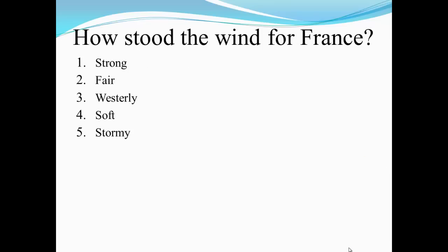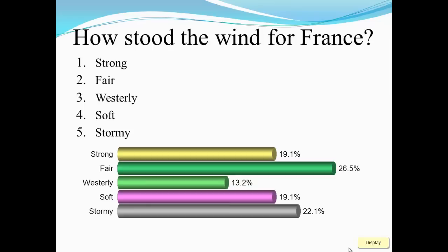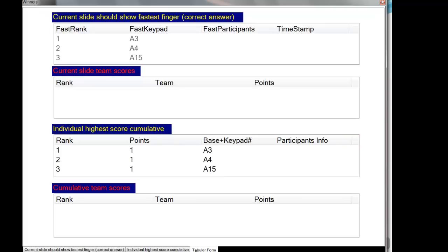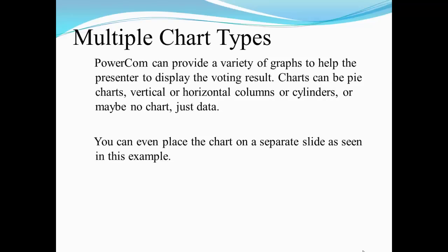We can set correct answers against questions. For instance, 'How stood the wind for France?' — the answer here is 'Fair'; it's the name of a book. We can see who got the fastest finger first: keypad 3, followed by 4. We can see what the highest individual scores are for the quiz to date, and if we had teams we could see a team result.